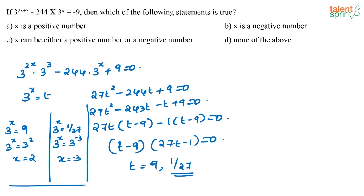So what can I say about the value of x? x can either be positive or x can be negative. Which of the following statements is true? Option C — x can either be positive or negative. So your correct answer is option C.